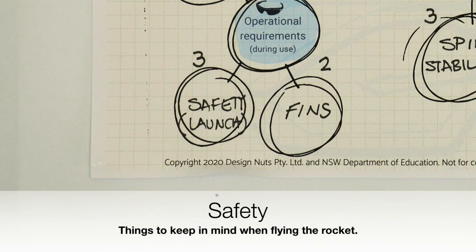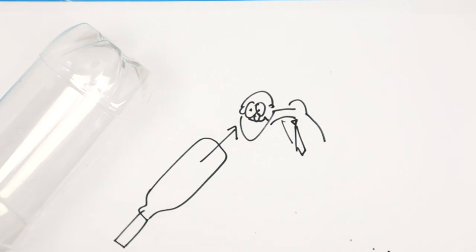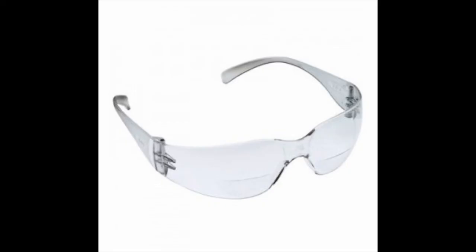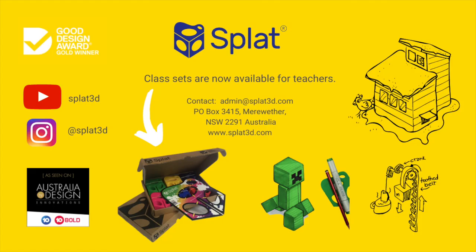Much more important than an awesome rocket design is the safety of those people around you. Be guided by your teacher, but one rule is never put your head over the top of the rocket, even if you're sure that there's no pressure inside. Safety specs never go out of style for rocket engineers and scientists. Have fun flying rockets, and don't forget to tell your teacher that she or he is awesome.